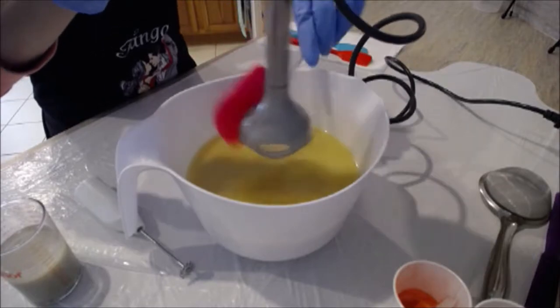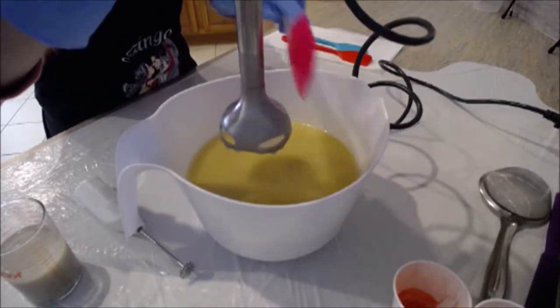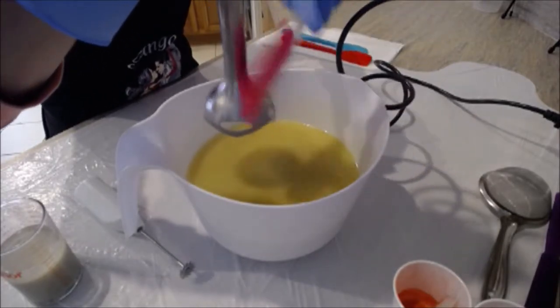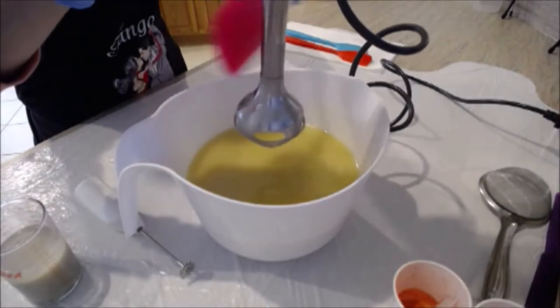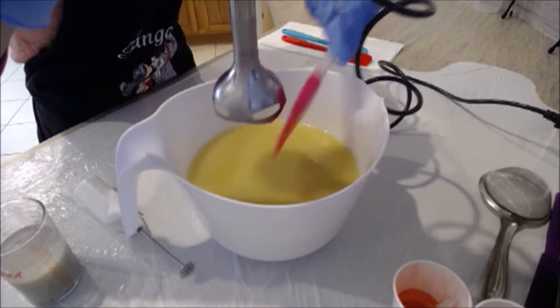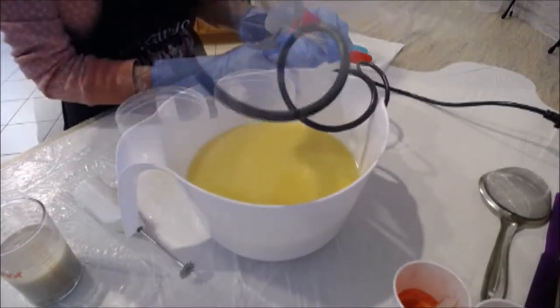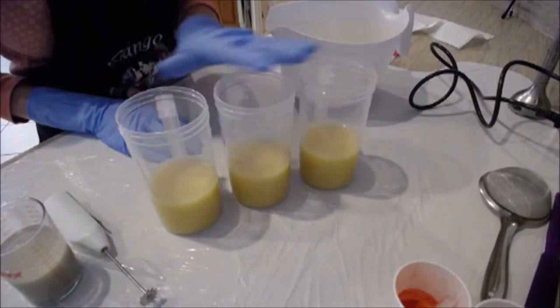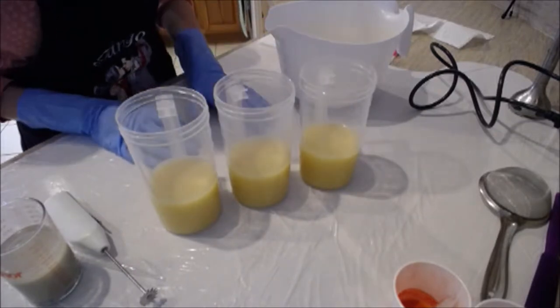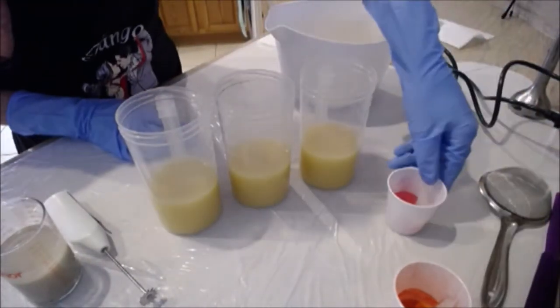So the main color is going to be white, and then I have accents of pink and kind of like a tealy blue and a coral pink. All right, so I've poured off some of my batter into these little cups here to make our accent colors.